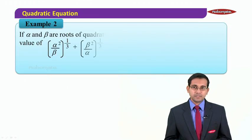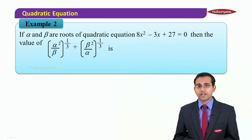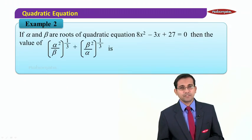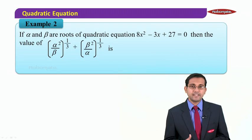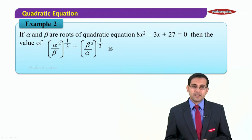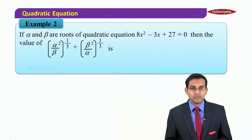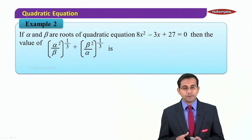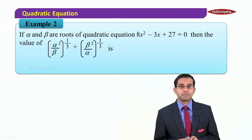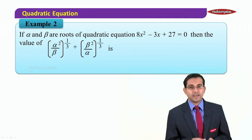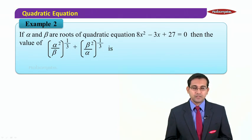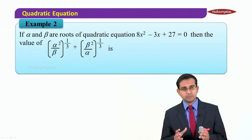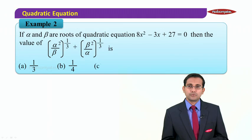In the next example, alpha and beta are the roots of the quadratic 8x² − 3x + 27, and we need to find the value of the expression ∛(α²/β) + ∛(β²/α). You can check, using the method we have learned, whether it is a symmetric expression or not.